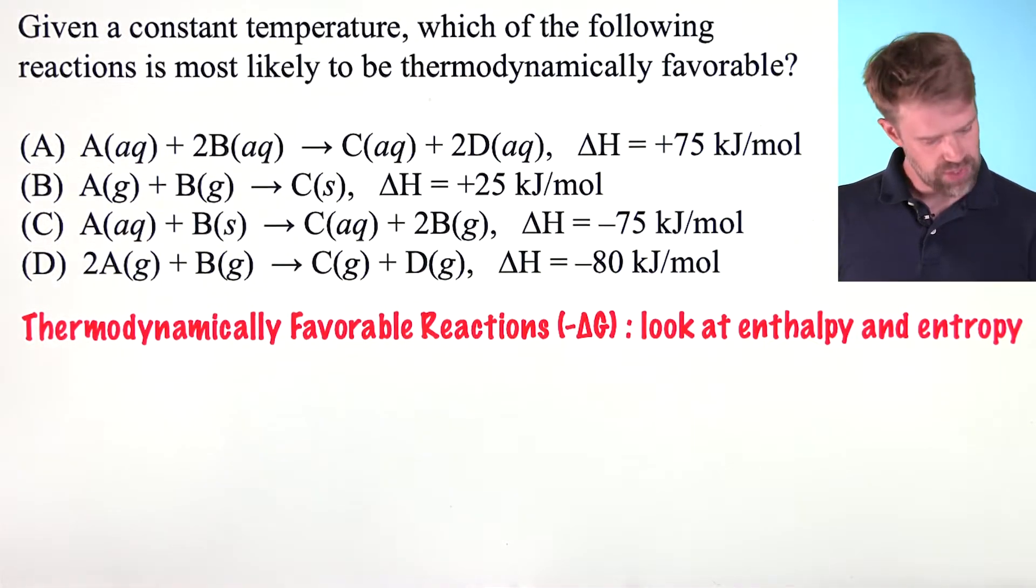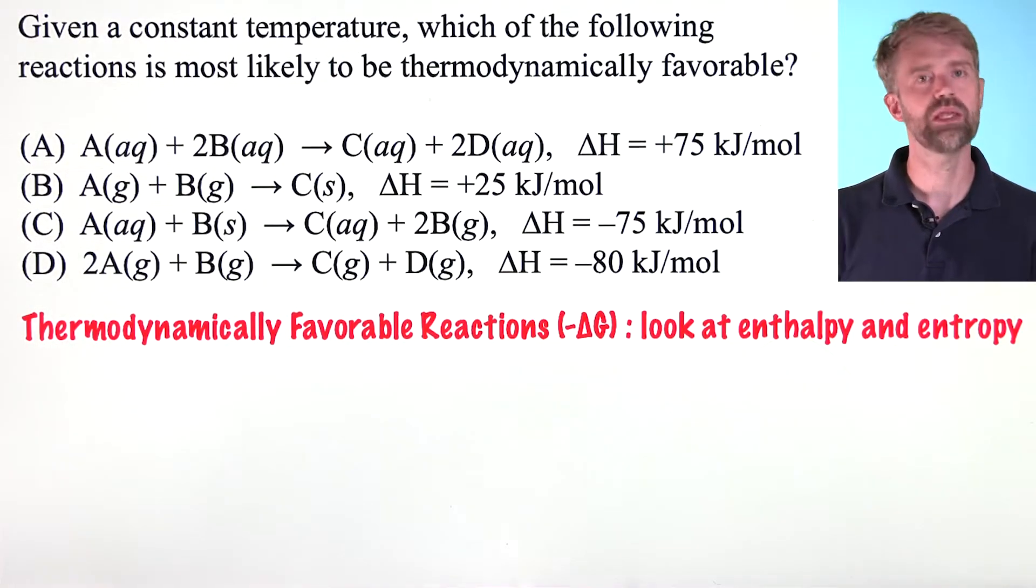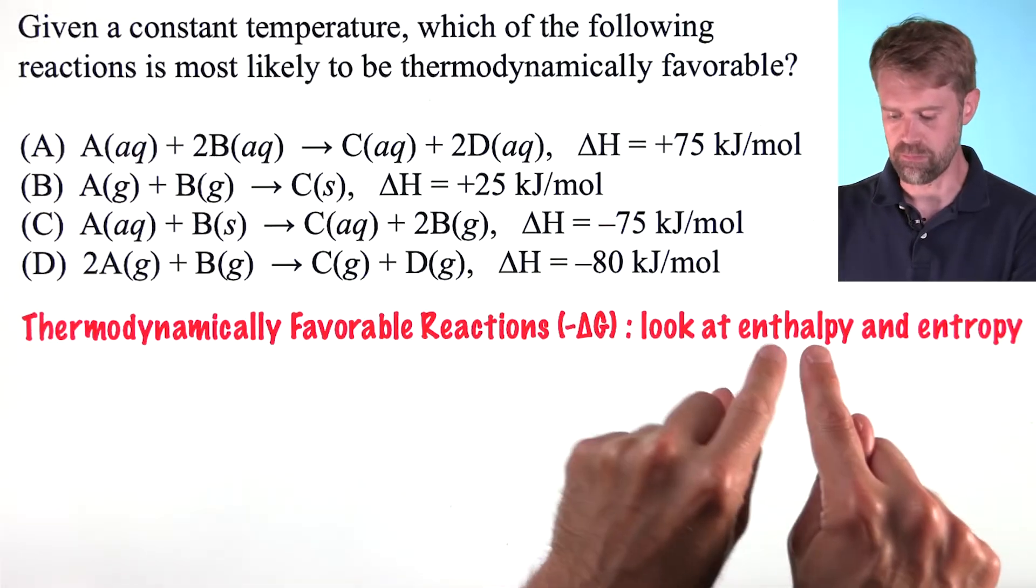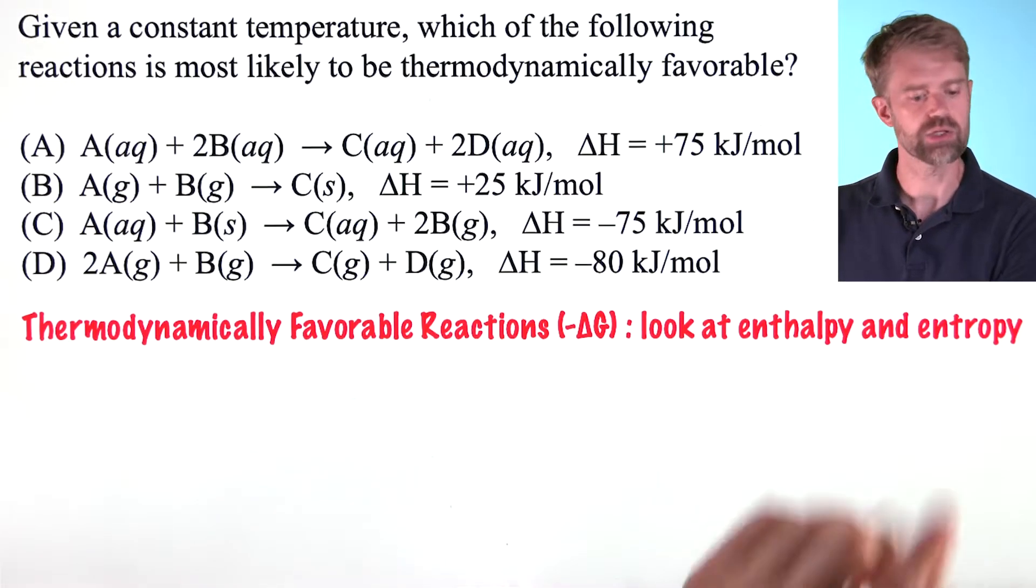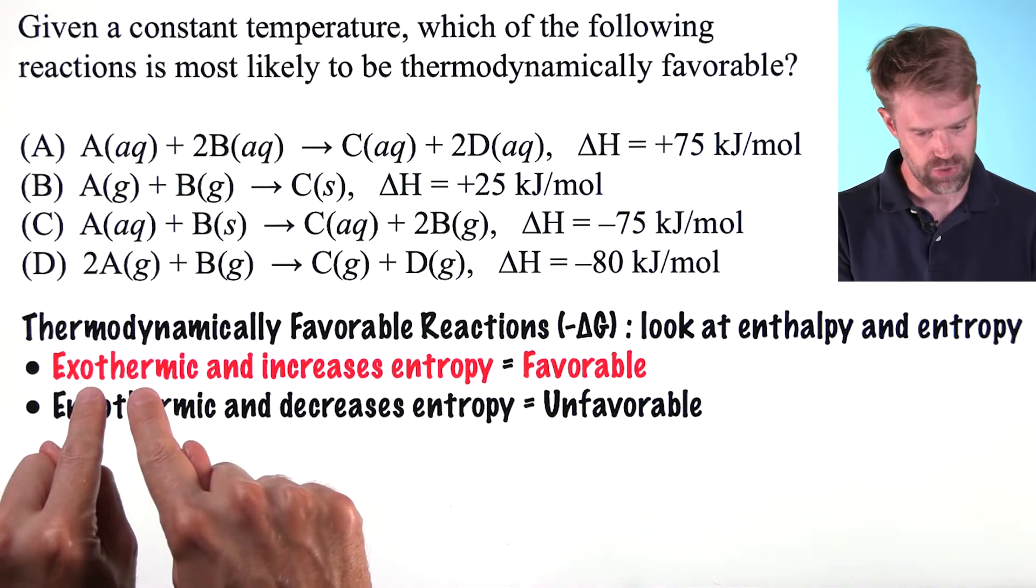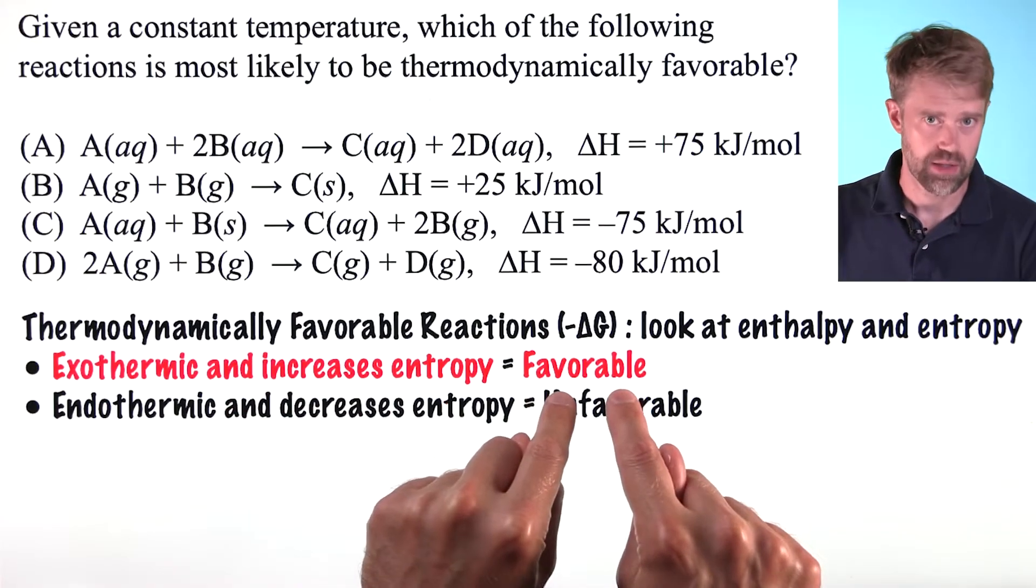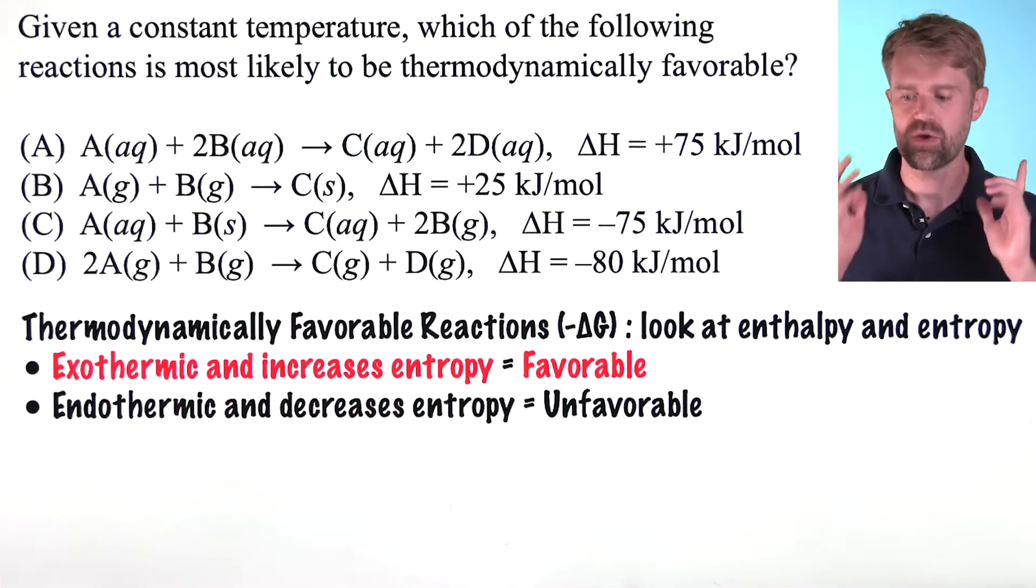So, to figure out the thermodynamic favorability of a reaction, we need to look at changes in both enthalpy and entropy. If a reaction is both exothermic and increases entropy, it's guaranteed to be thermodynamically favorable.